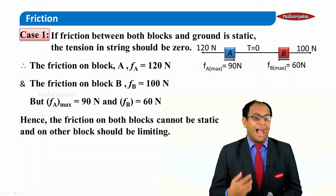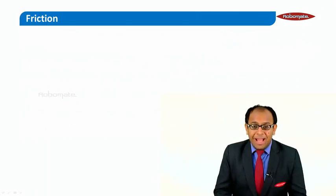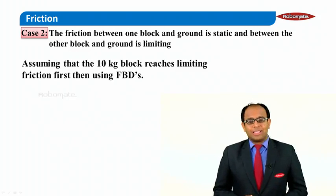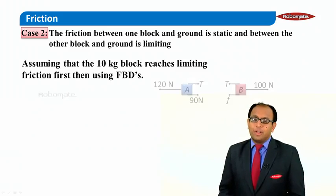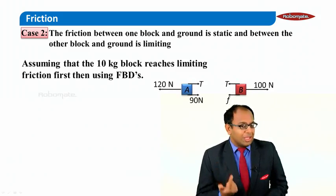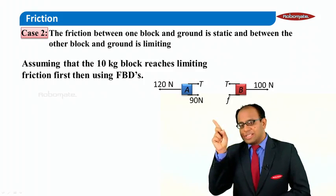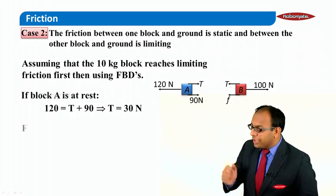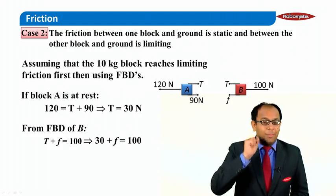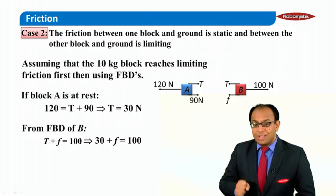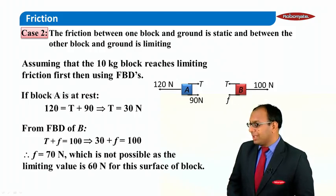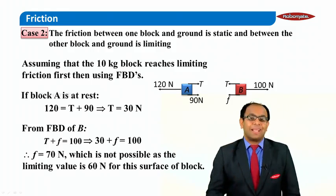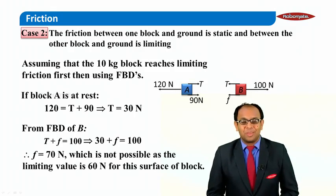So one of them must have limiting friction. Let's first assume the 10 kg block A reaches its limiting friction. Limiting friction on A is 90N, so with 120N applied to the left and 90N friction to the right, the balance is taken care of by tension, giving tension equals 30N. From the FBD of B, T plus friction equals 100, so 30 plus friction equals 100, giving friction on B equals 70N. But 70 exceeds the maximum of 60 — so this case is also not possible.